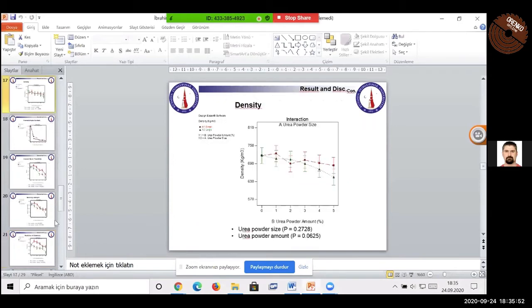When the density interaction graphs are examined, it is seen that as the amount of UREP powders increases, both density were slightly decreasing. However, the effect of UREP powders size and UREP powders amount on this change was not found to be statistically significant.